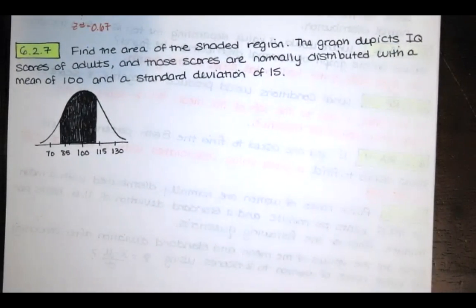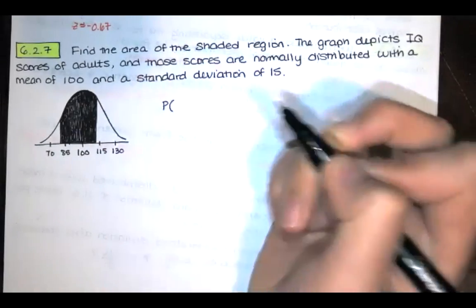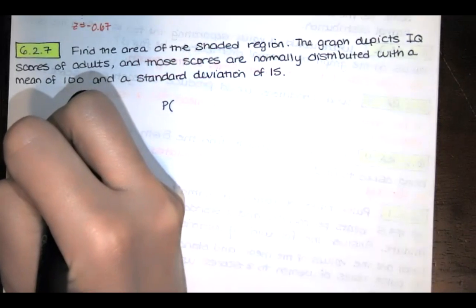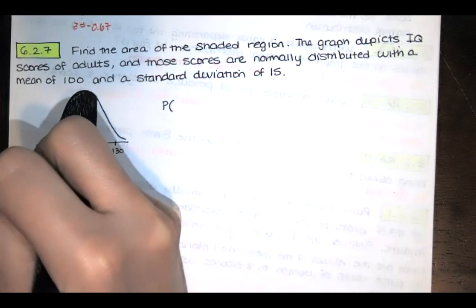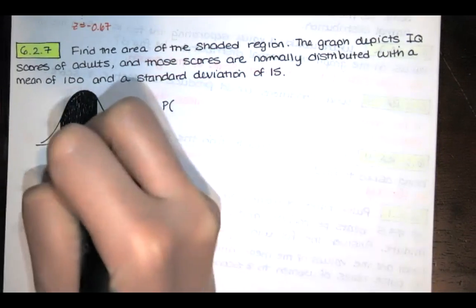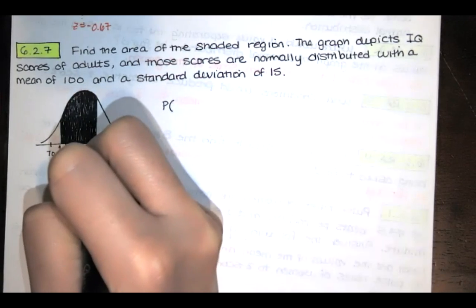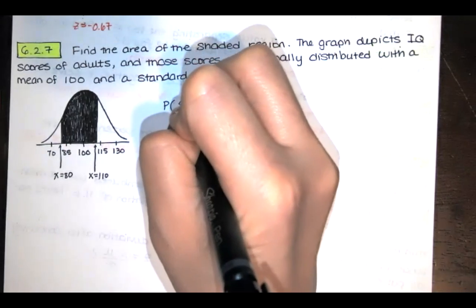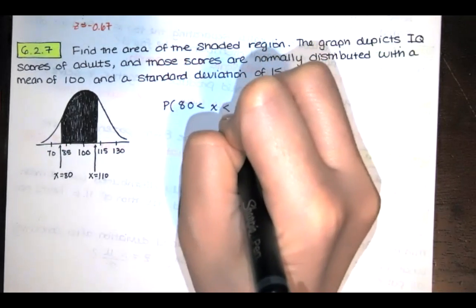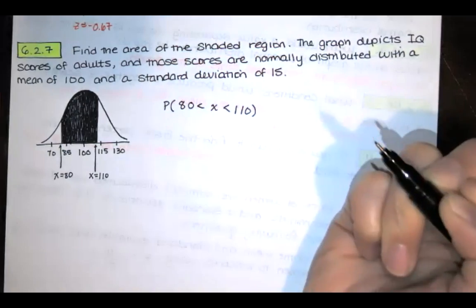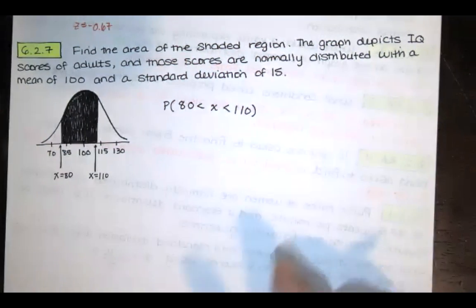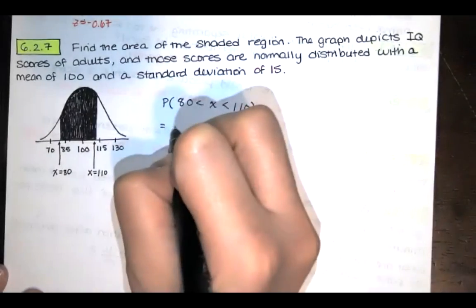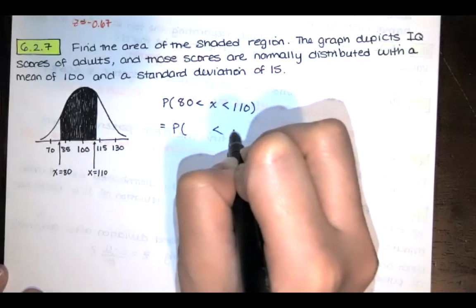So the area of the shaded region, which is the same as the probability that those IQ scores were between x equals 80 and x equals 110. In order to figure that out, we can find the corresponding z-scores that go with 80 and 110.